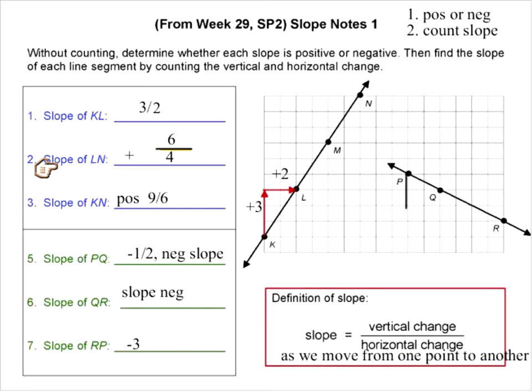I will fill in number one. Number one is positive. And go ahead, if it's possible to simplify your slope, go ahead and do that and write it in simplest form if you can.